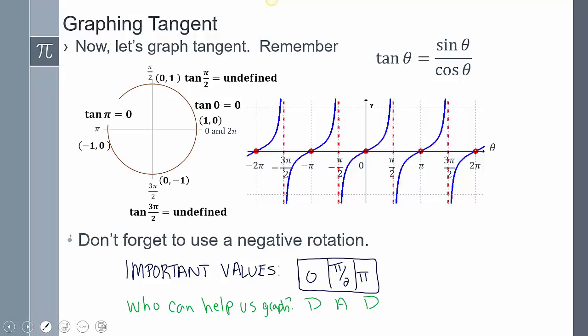Dot, asymptote, dot. D-A-D. Dad: dot, asymptote, dot. If we can remember dad, who's going to help us graph this, it's going to be much easier.